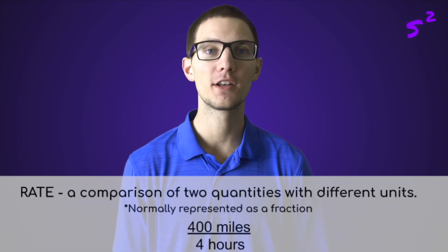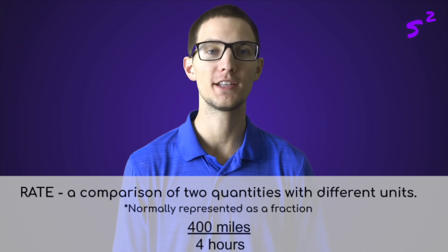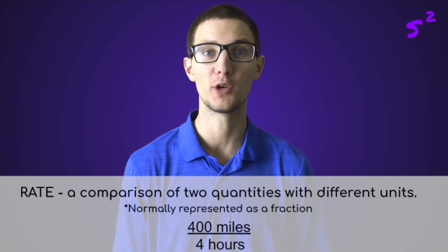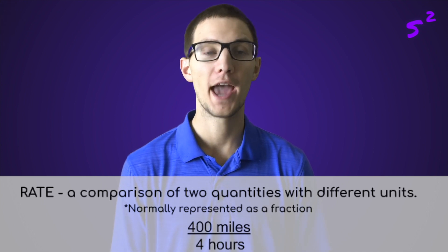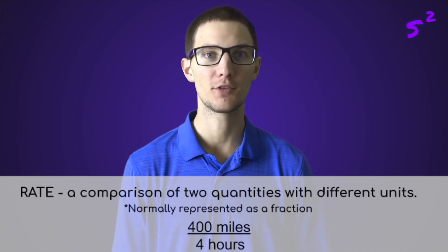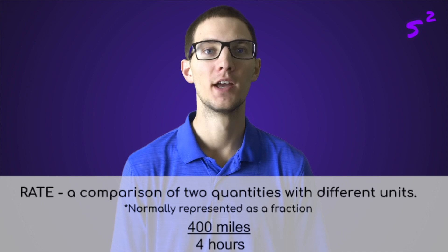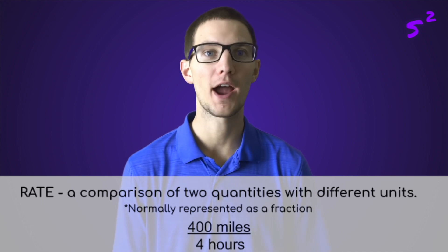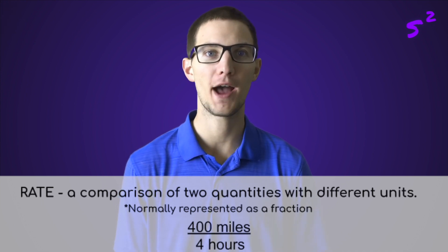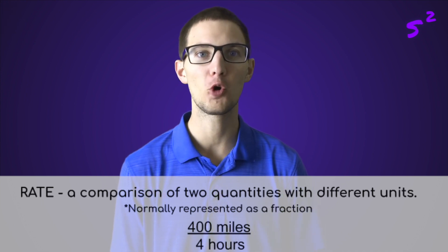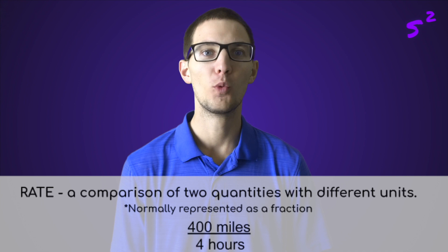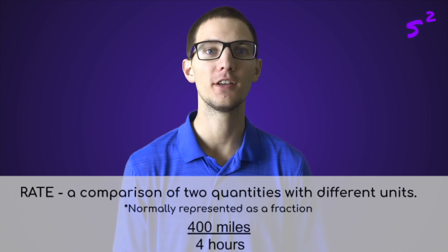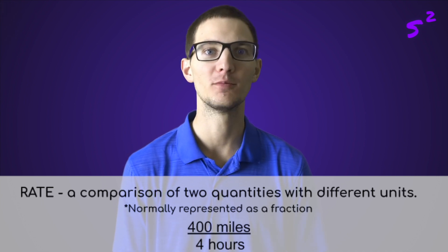A rate is a comparison of two quantities with different units, and a rate is normally represented as a fraction. For instance, if someone drives 400 miles in four hours, we could represent this with the fraction 400 over 4.